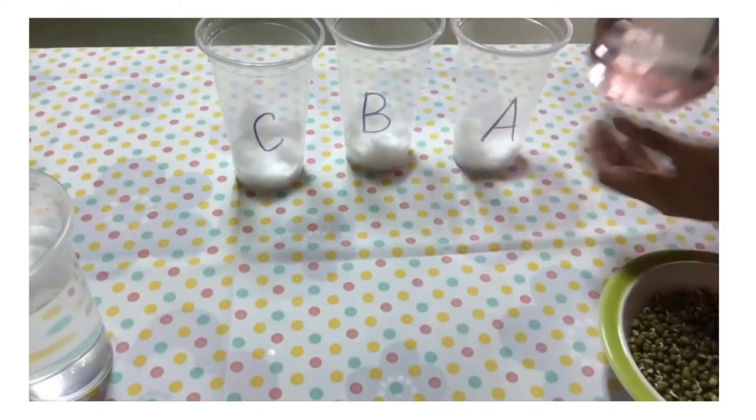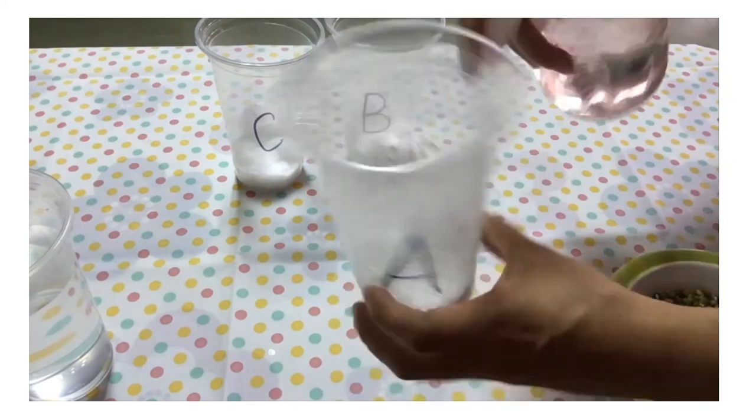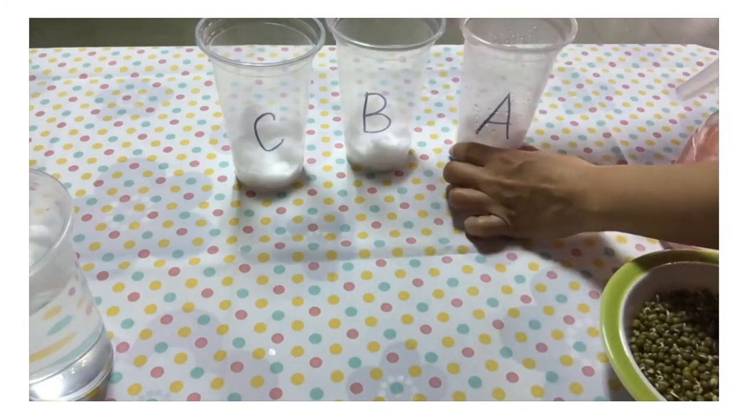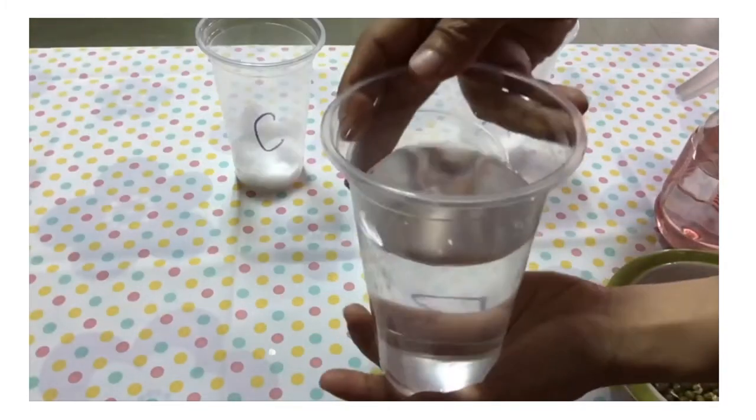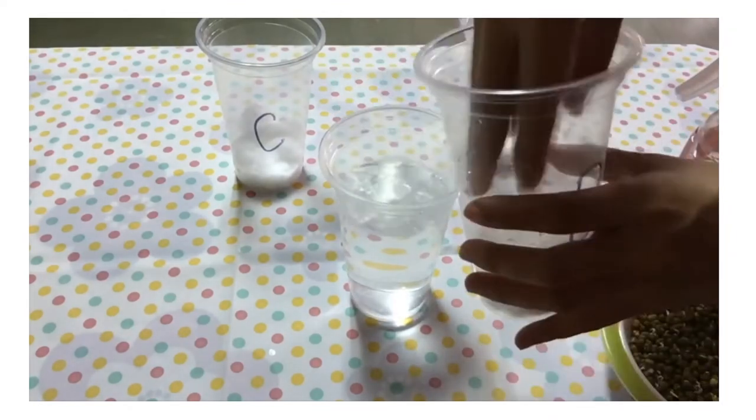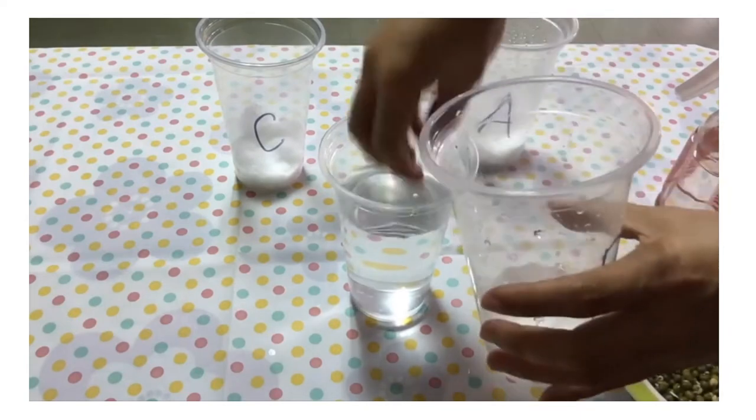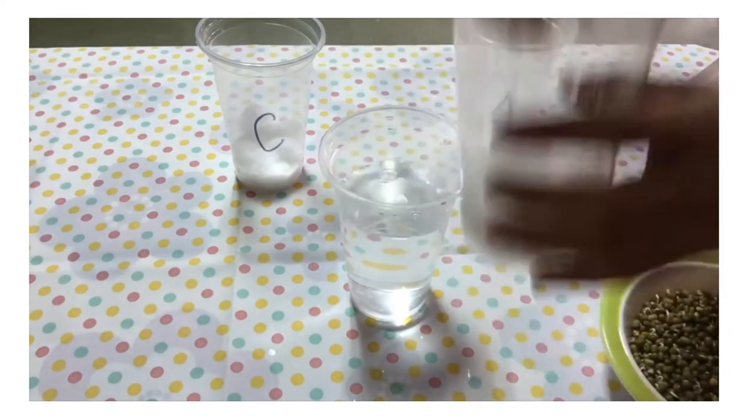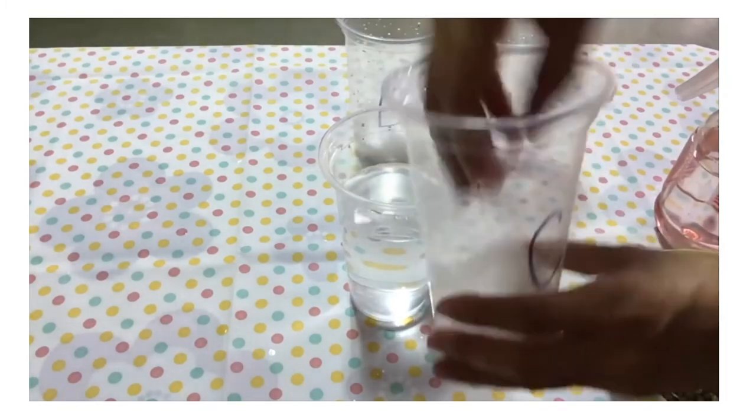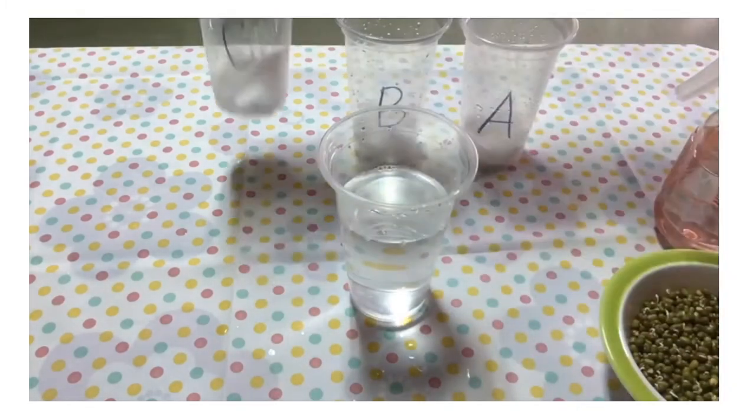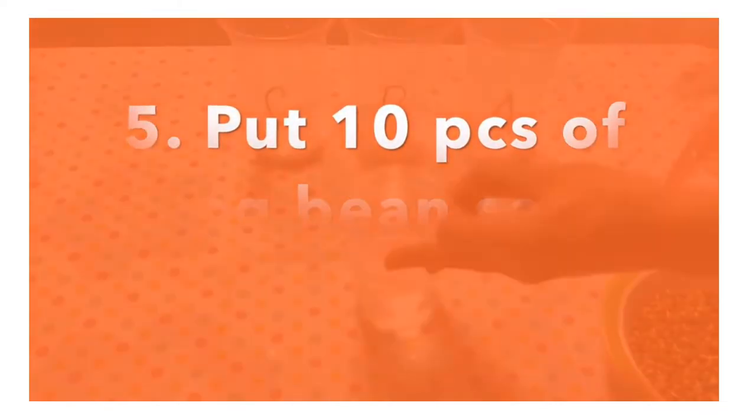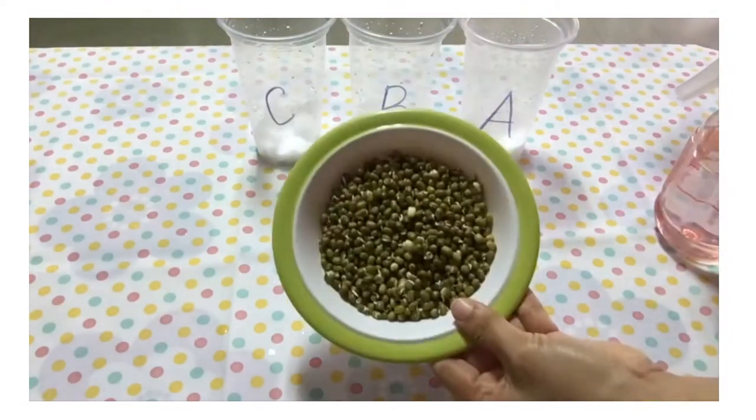Step 4: Spray some water inside the cup. You can use a sprayer if you have at home. You can also use your hand if you don't have a sprayer. Just dip it in the water and sprinkle some water inside the cup.